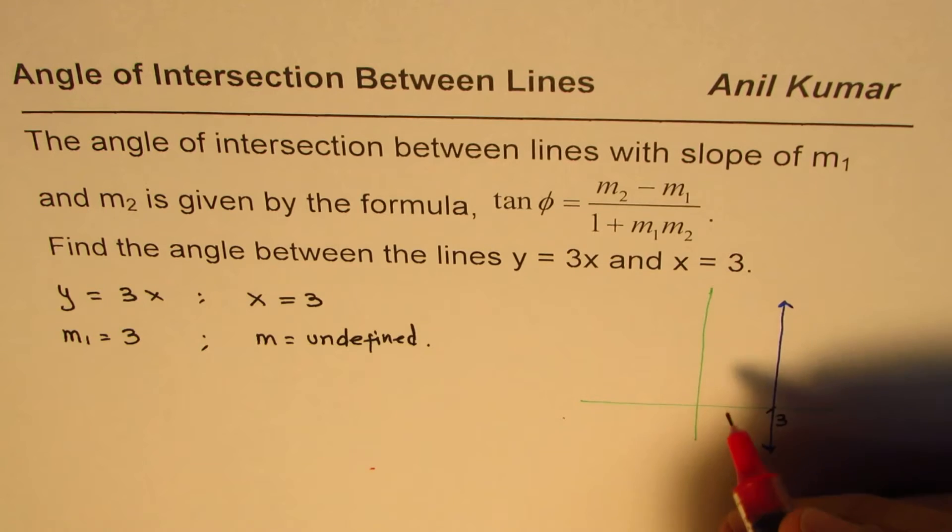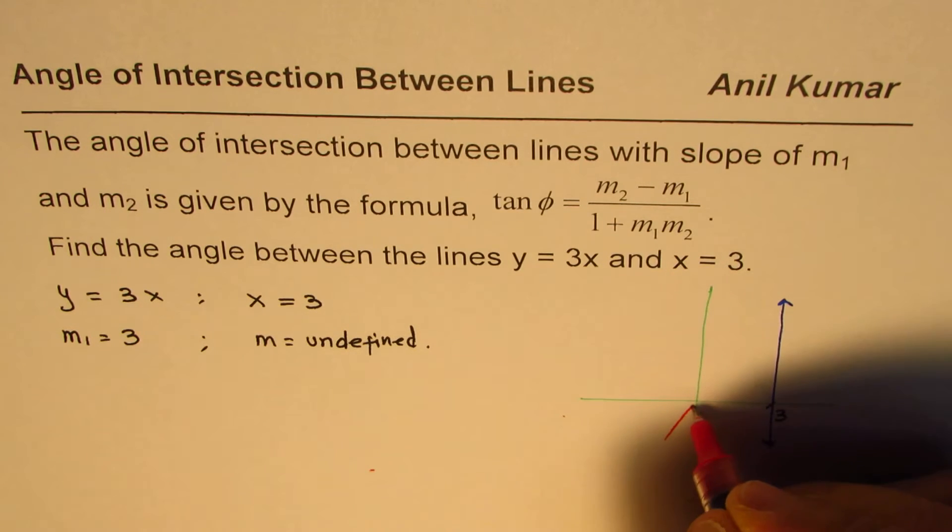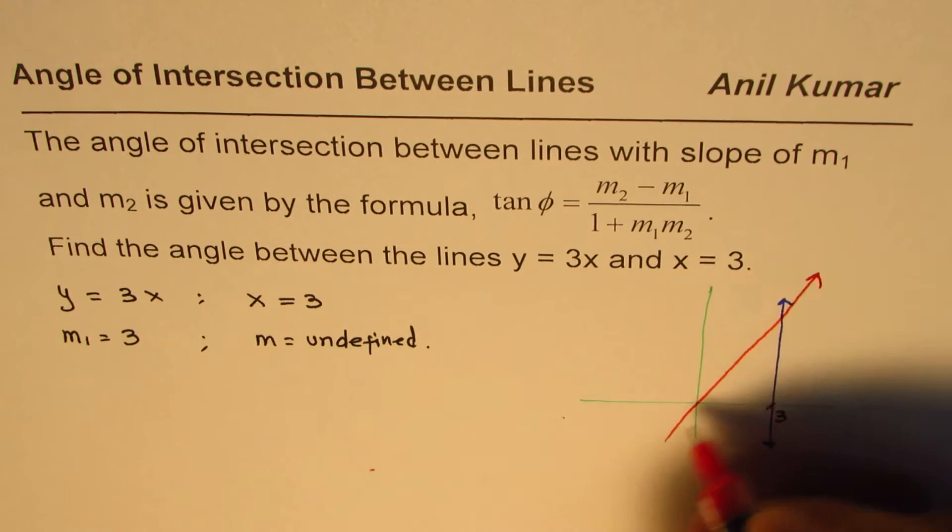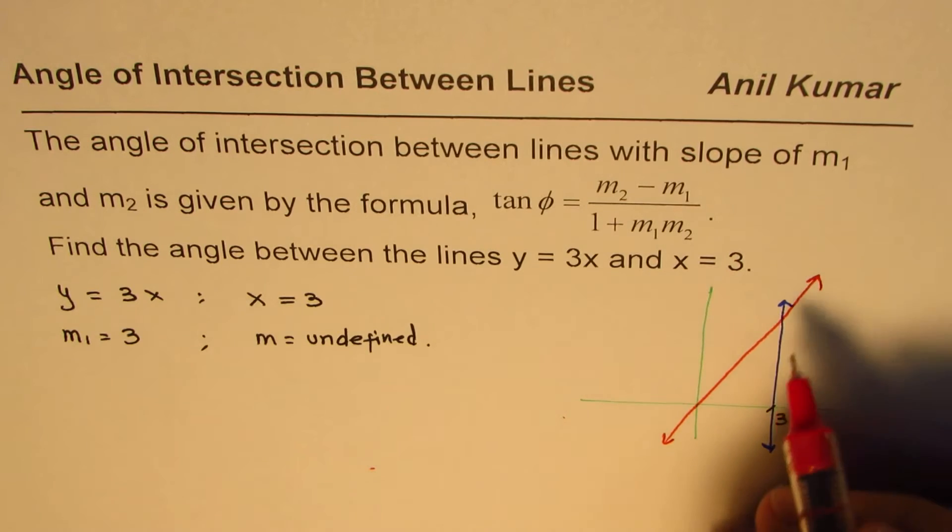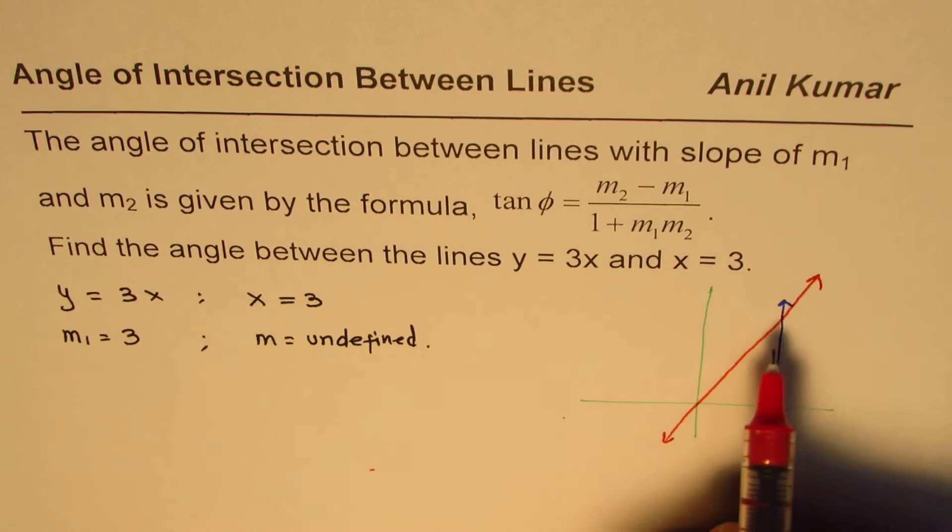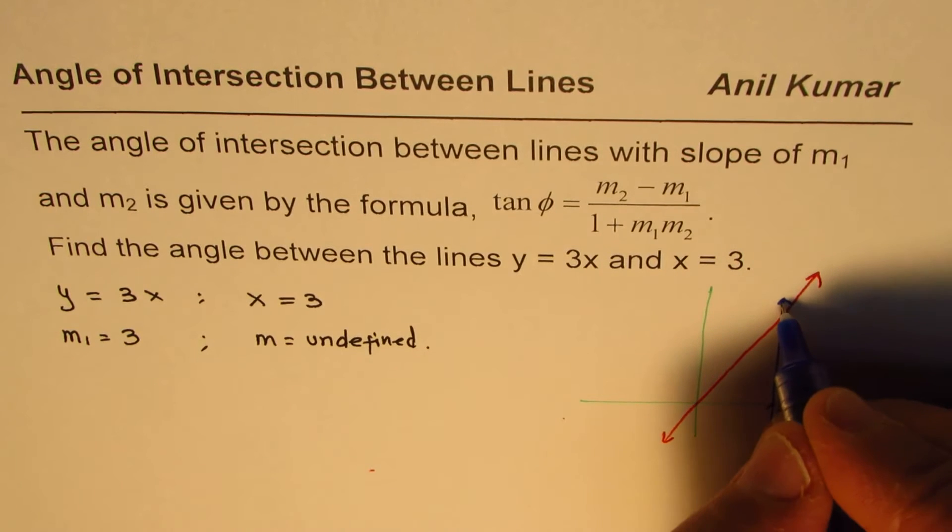It goes through the origin and the slope is kind of steep. So let me just make a line like this. Let us assume that that slope is 3. Now the question is, what is the angle between these two lines?